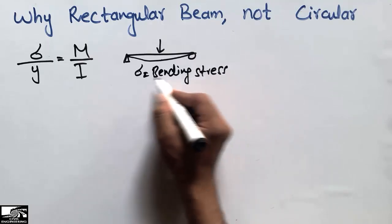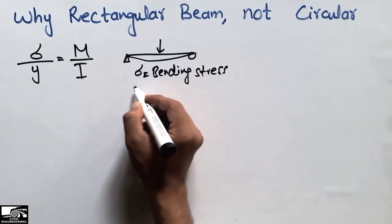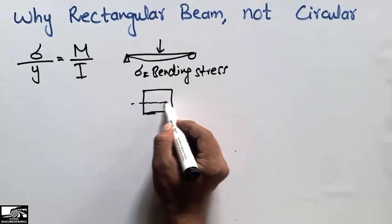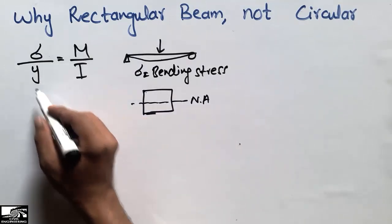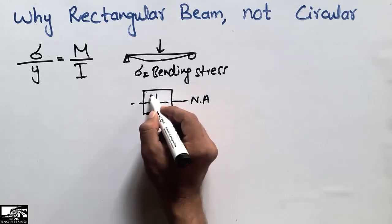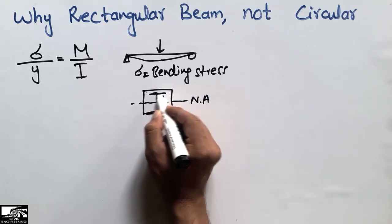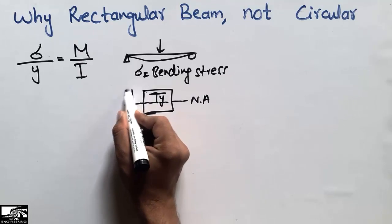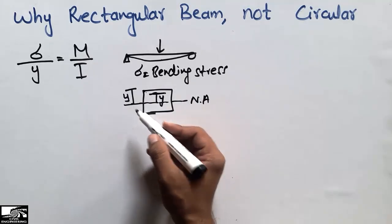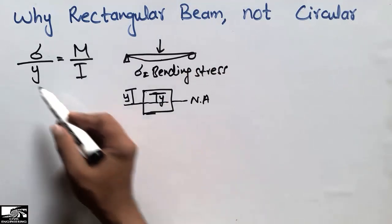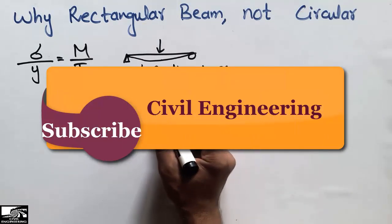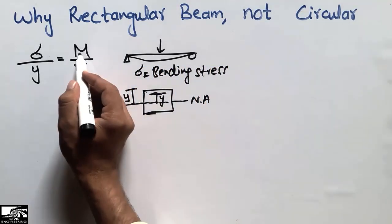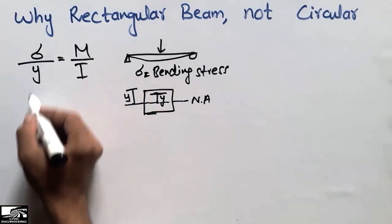If this is my beam and this is the cross-section, this is the neutral axis. Y is defined as the distance from the neutral axis to the point of interest. For example, from the neutral axis to the top of the beam is Y. It depends on where you want to find the stresses. M is the bending moment and I is the moment of inertia.